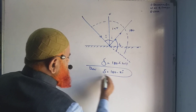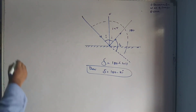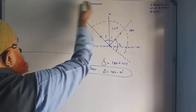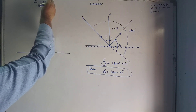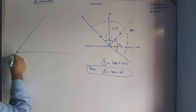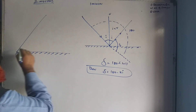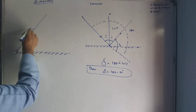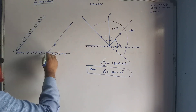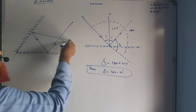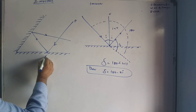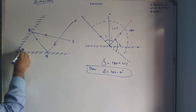That is the deviation because of a single mirror. Now let us consider deviation because of two mirrors. We consider two mirrors with a light ray entering, taking one reflection, taking a second reflection, and coming out. We name the ray segments PQ and RS, and the two mirrors make a certain angle theta between them.